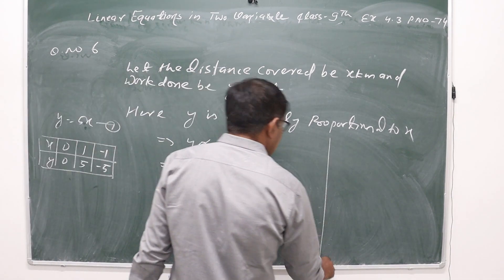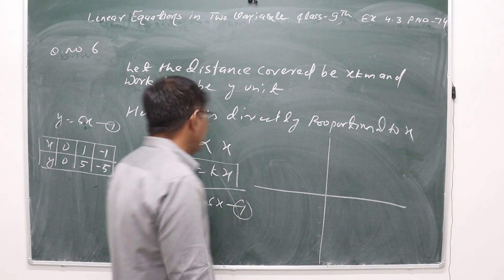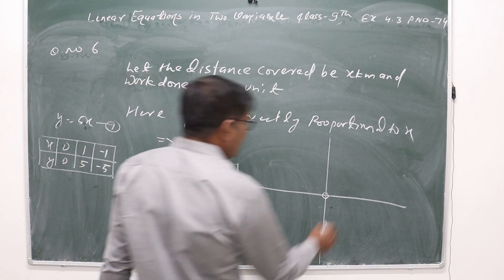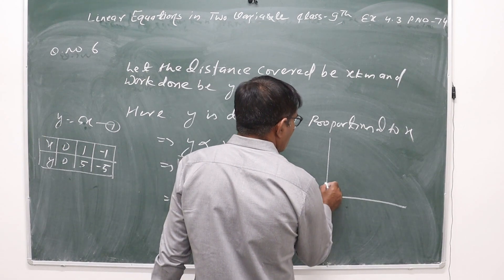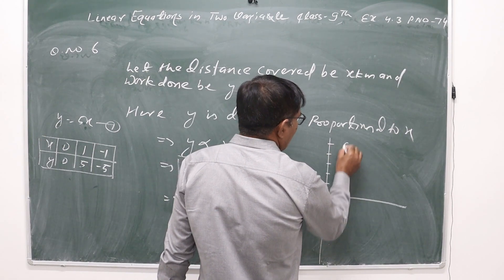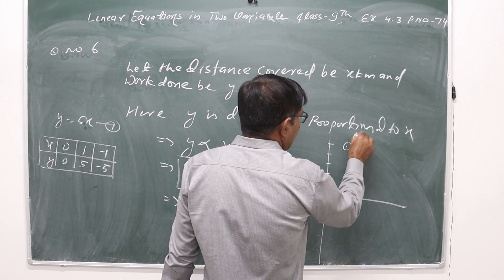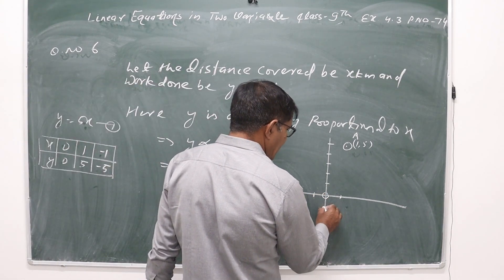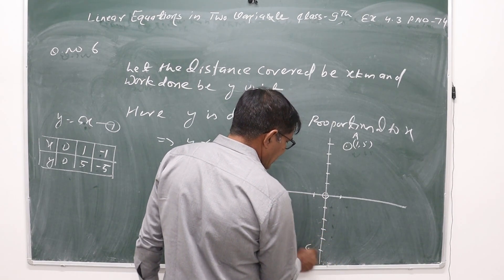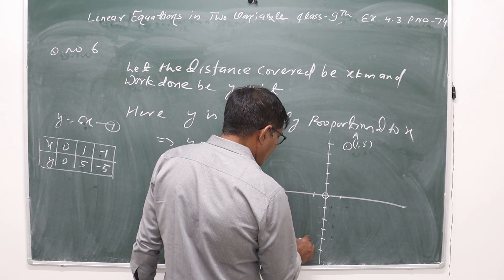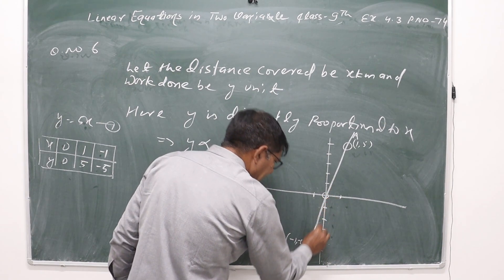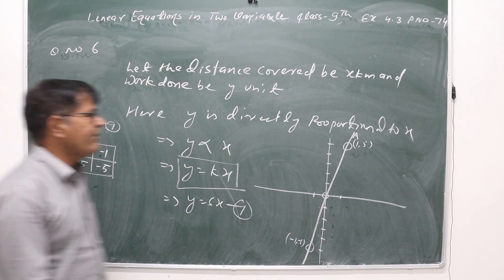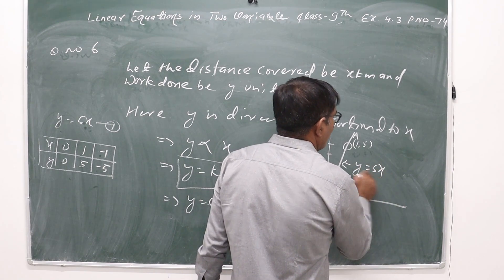To draw the graph of y = 5x, we plot the points. When x = 0, y = 0, so the point is (0, 0). When x = 1, y = 5, so the point is (1, 5). When x = -1, y = -5, so the point is (-1, -5). If we join these points, we get the graphical representation of y = 5x. Please pause the video and note it down.